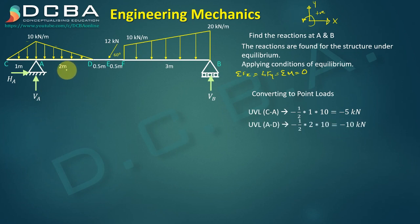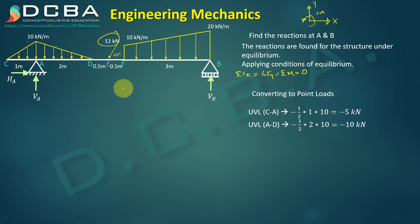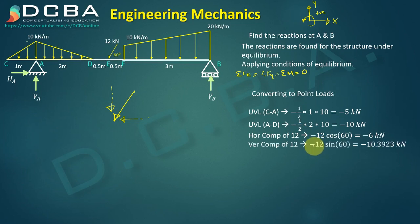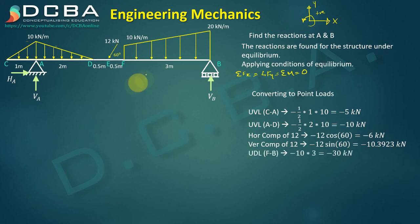Converting the UVL from A to D: minus half × base × height = minus 10 kN. Then we have the 12 kN inclined point load. We resolve it into components: horizontal component = minus 12 cos 60° = minus 6 kN, and vertical component = minus 12 sin 60° = minus 10.3923 kN.